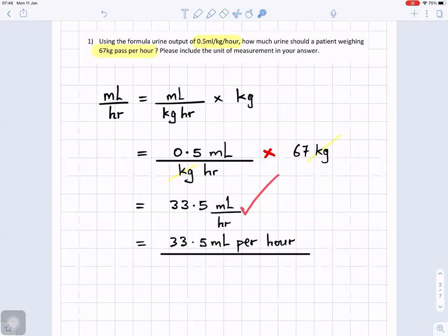You can write it like that, but this is the way they normally write it, 33.5 milliliters per hour. So all you are doing, this is just showing you the units, how to work.